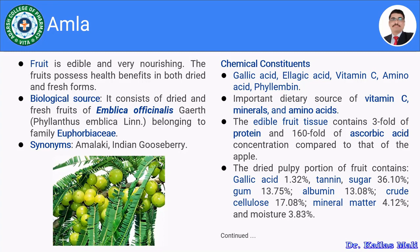The edible fruit tissue contains approximately three-fold more protein and 160-fold more ascorbic acid compared to apple. The dried pulpy portion of the fruit contains gallic acid approximately 1.31%, gums 17.75%, albumin 13.08%, crude cellulose 17.08%, mineral matter 4.12%, and moisture 3.83%. These are some of the chemical constituents of Amla.